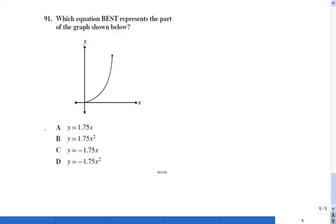A, y equals 1.75 times x. That's a linear equation. Not good. C, y equals negative 1.75x. Linear equation. Not good.